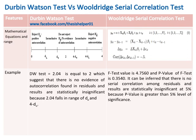Example of the Wooldridge Serial Correlation test: the F-test value is 4.7560 and the P-value of the F-test is 0.3540. It can be inferred that there is no serial correlation among residuals, and the results are statistically insignificant at 5% because the P-value is greater than the 5% level of significance.